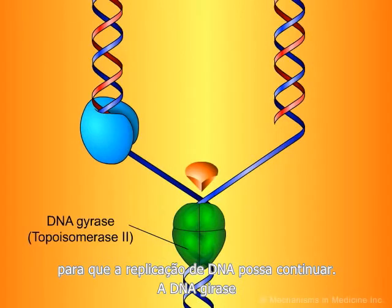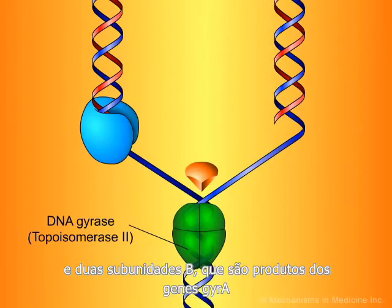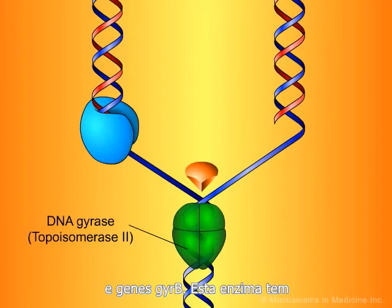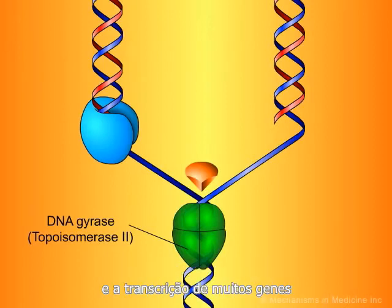DNA gyrase is an essential bacterial enzyme composed of 2A and 2B subunits, which are products of the GYRA and GYRB genes. This enzyme has other important functions which affect the initiation of DNA replication and transcription of many genes.